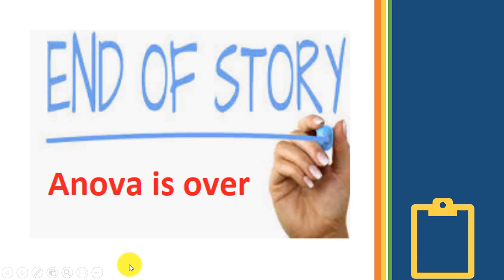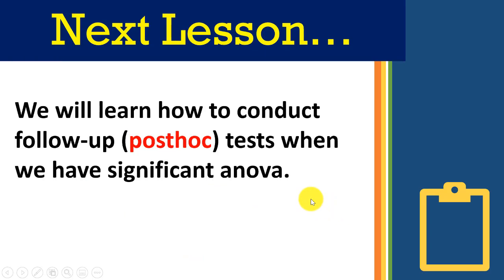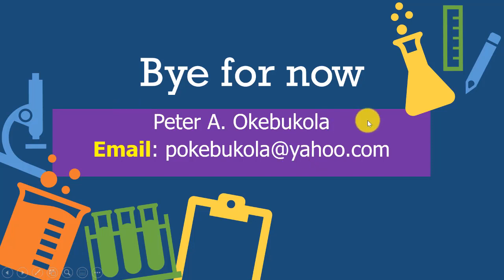ANOVA is over! To summarize, in this lesson we learned fully about one-way ANOVA: its brief history, mathematical model, when to use it, how to use it, and how to report findings. In the next lesson, in the event that your ANOVA is significant, you need to go a step further to find out which group is causing the significant difference — that's why you do a follow-up post-hoc test. From me, Peter, bye for now. If you have comments or questions, send them to my email.